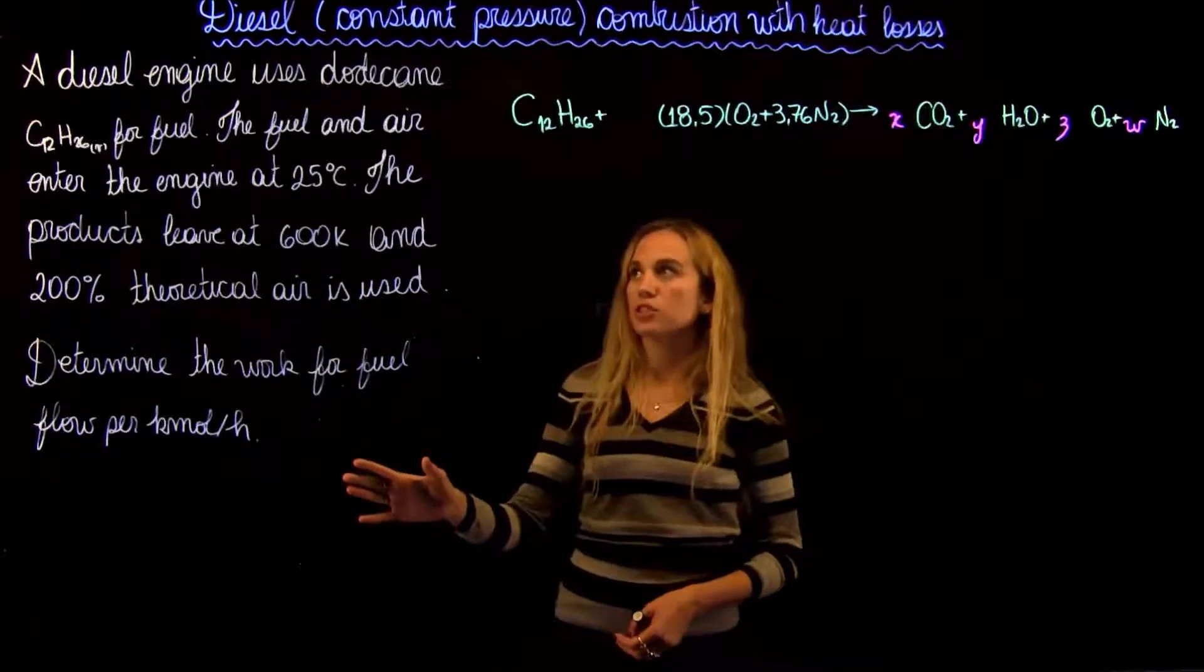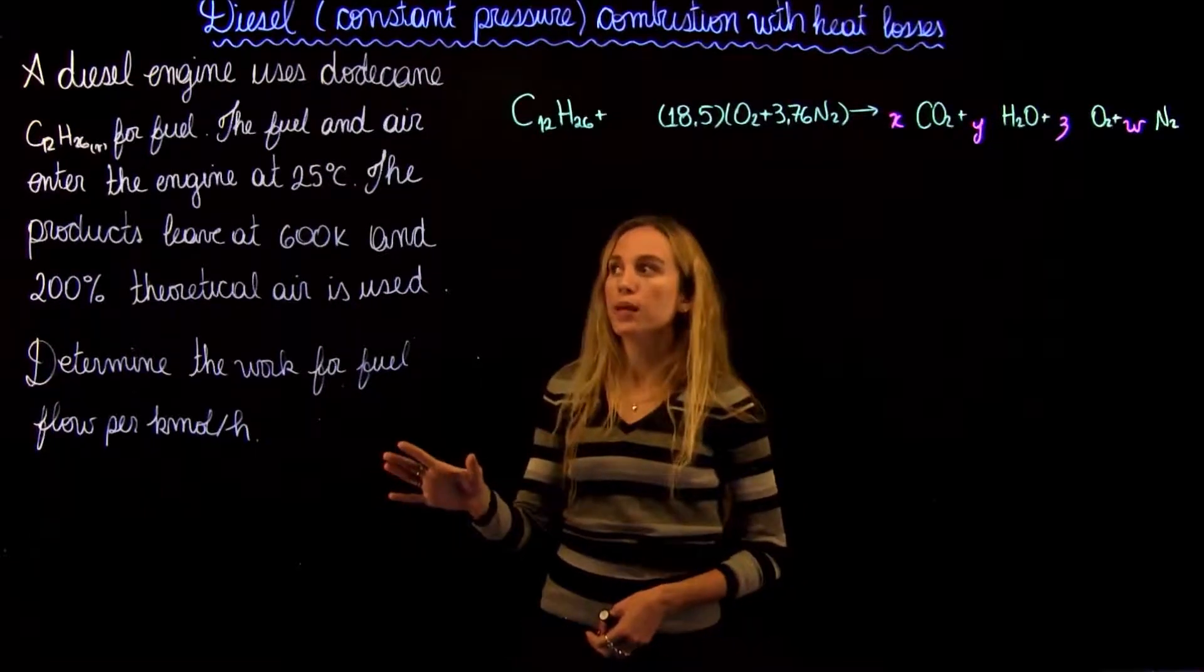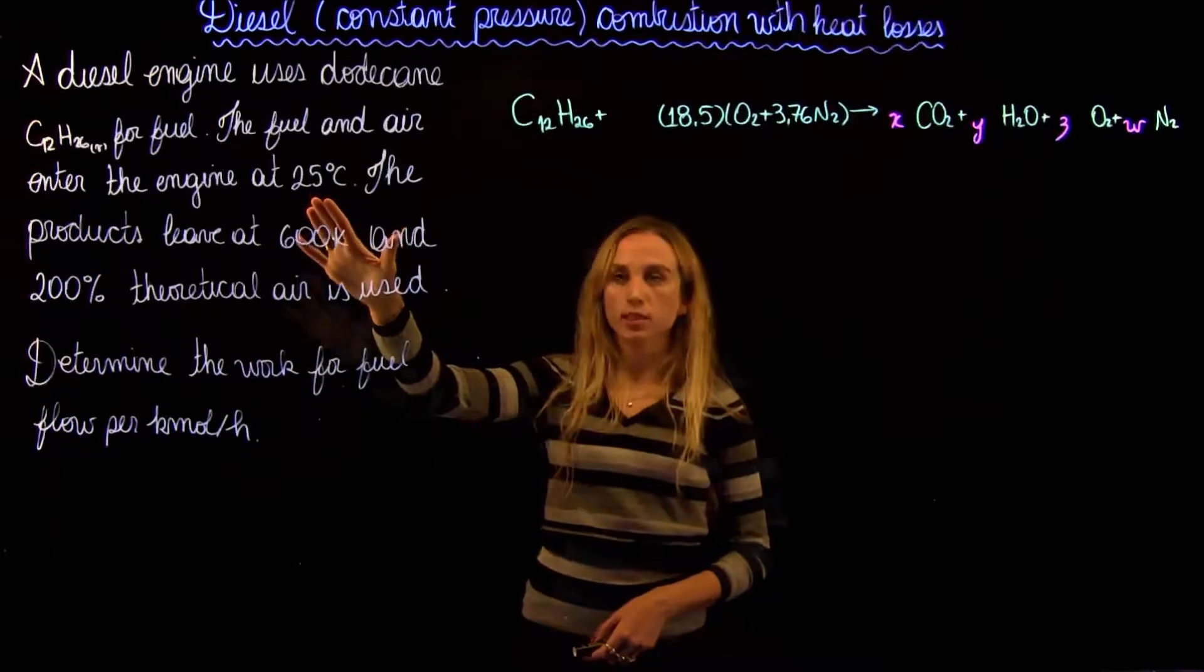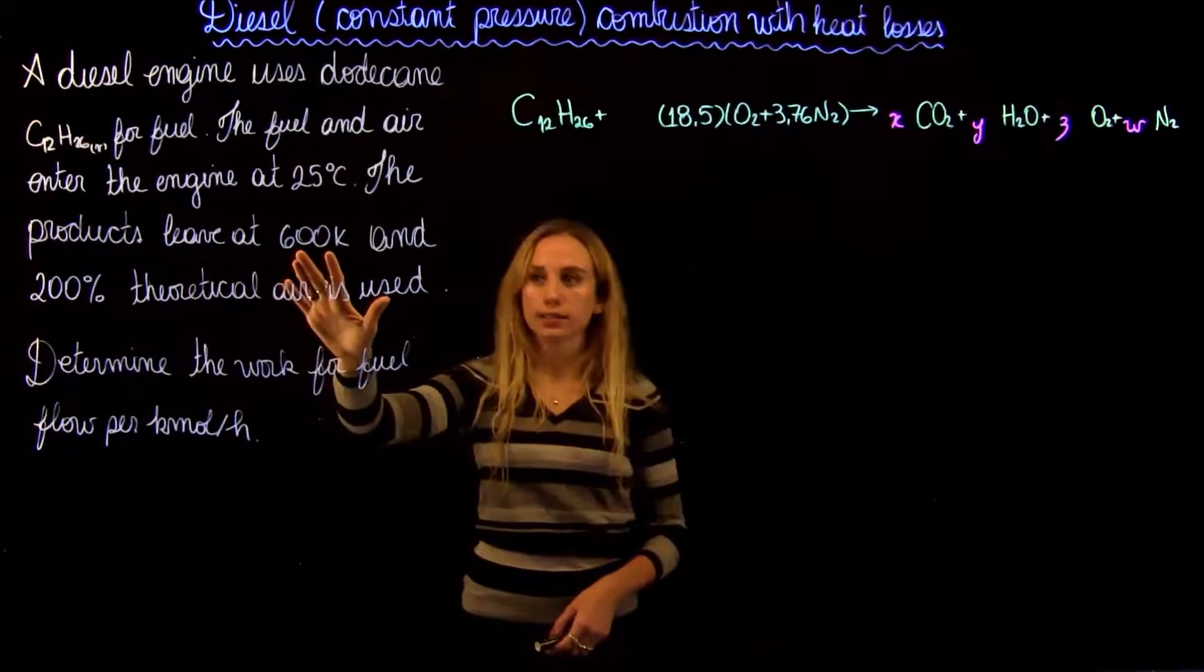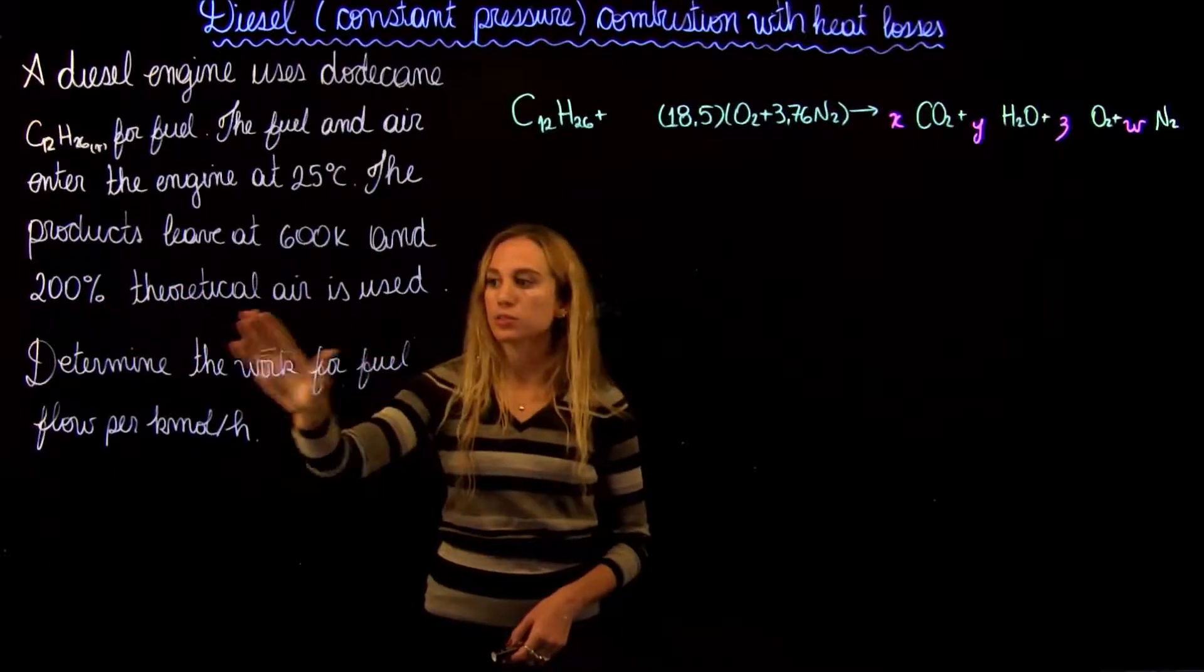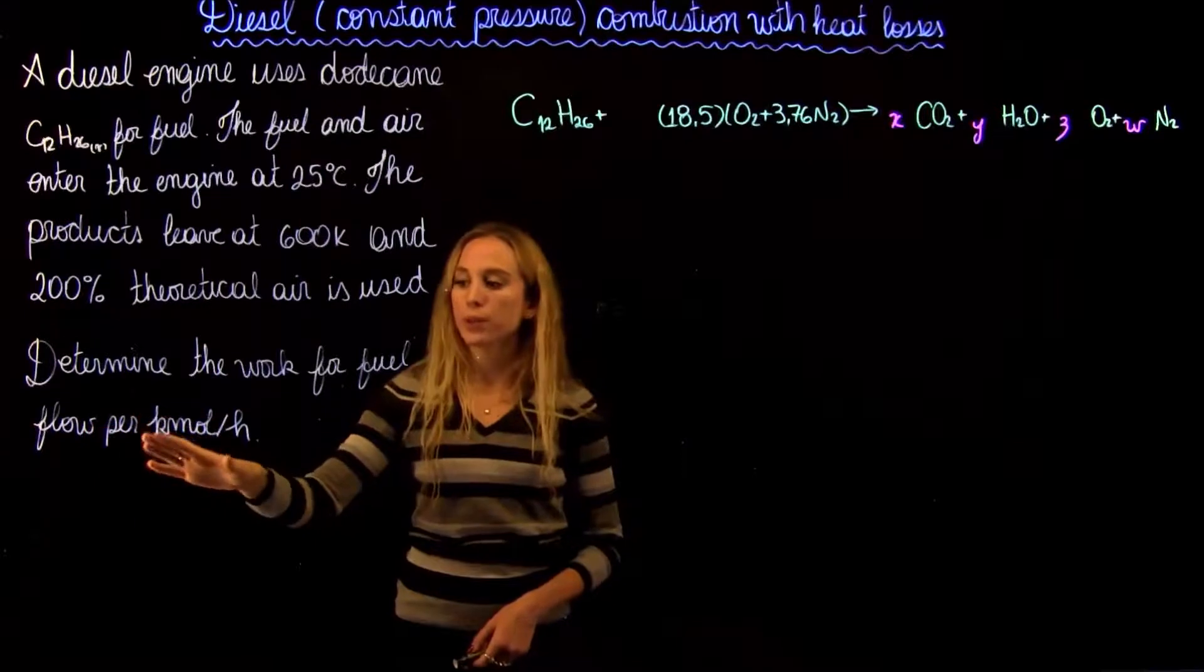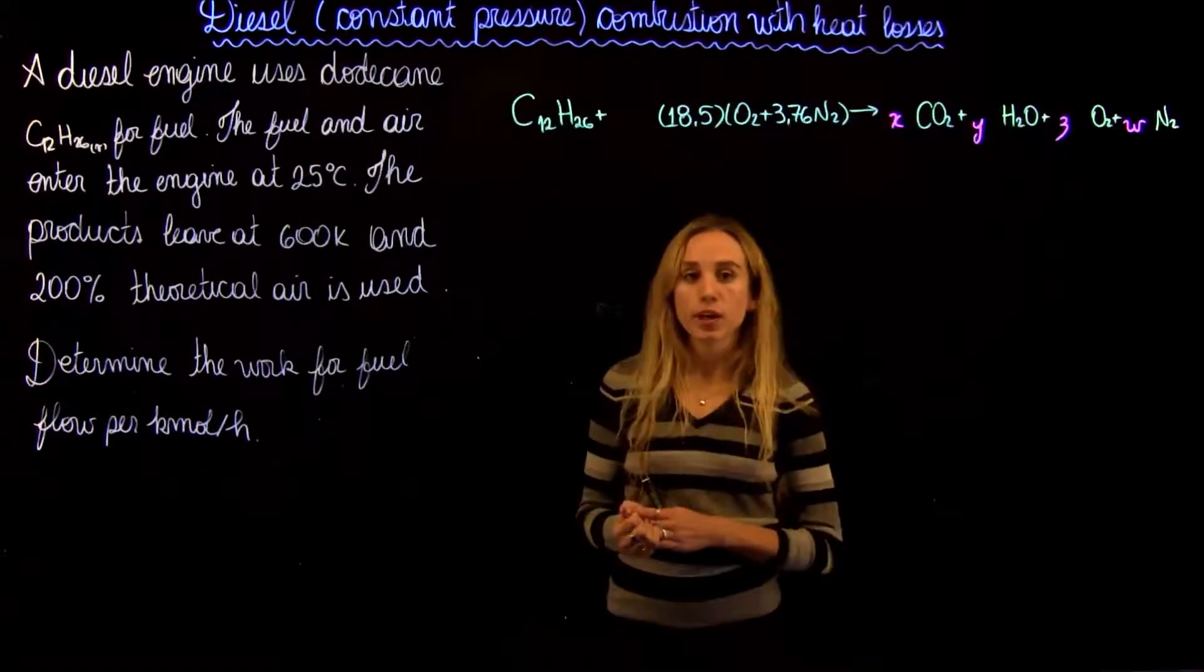We are told that a diesel engine uses dodecane (C12H26) for fuel. The fuel and air enter the engine at 25 degrees Celsius. The products leave at 600 kelvins and 200% theoretical air is used. We are asked to determine the work per fuel flow per kilomol per hour.